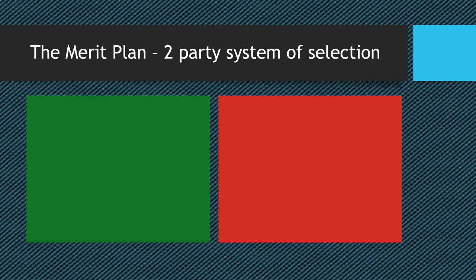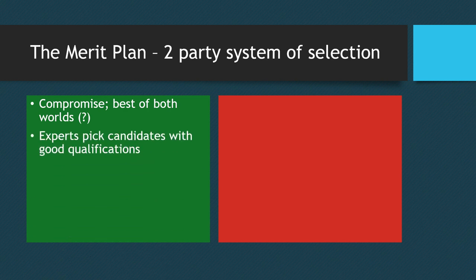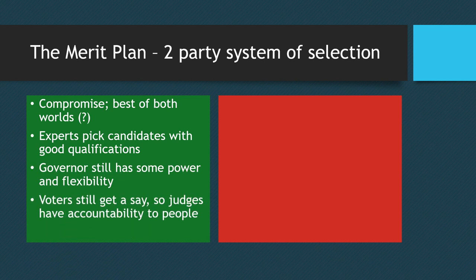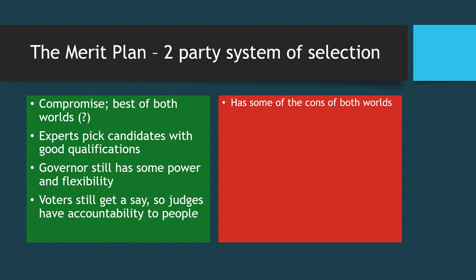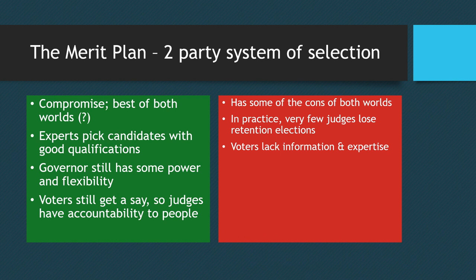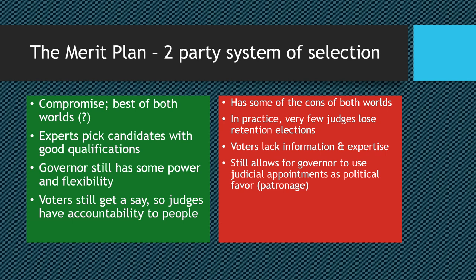Many states have recently moved to the merit plan, which combines the benefits of popular election and gubernatorial appointment. The pros are that it's a compromise — experts pick qualified candidates, the governor retains some power and flexibility, and voters still have accountability over their judges. However, it also carries cons of both worlds: it is very uncommon for judges to lose retention elections, so voter information remains an issue, and the governor can still use patronage to reward loyal supporters.